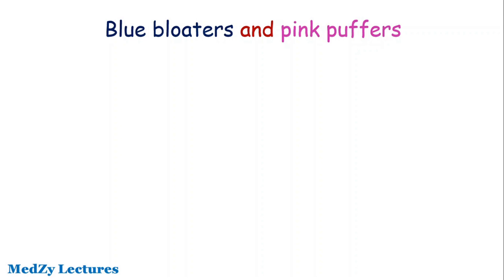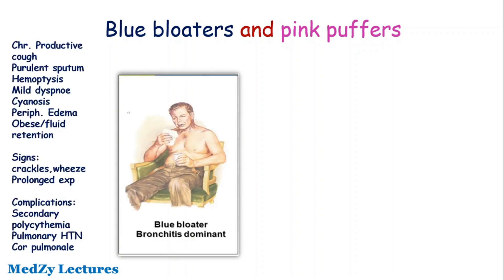First, the blue bloaters who have chronic bronchitis as their dominant feature. They appear obese with central cyanosis, chronic productive cough, purulence, sputum or hemoptysis, dyspnea is mild or not very evident. They may have peripheral edema or fluid retention in the body. On clinical examination, they have prolonged expiration.